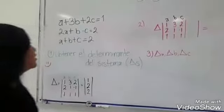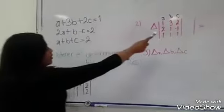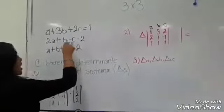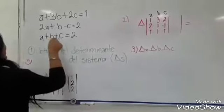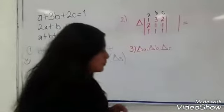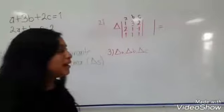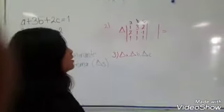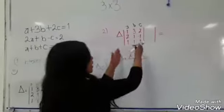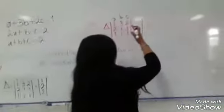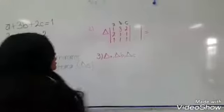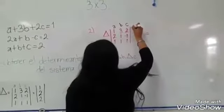Después tenemos que sacar los valores de C: C vale 2, lo ponemos acá; C vale menos 1 y se pone con todo su signo, menos 1; y por último C vuelve a valer 1. Para poder multiplicar de manera cruzada, necesitamos agregar columnas. Si las quieres agregar en el lado derecho, solamente es agregando 2 columnas, que serían las primeras, la de A y la de B.